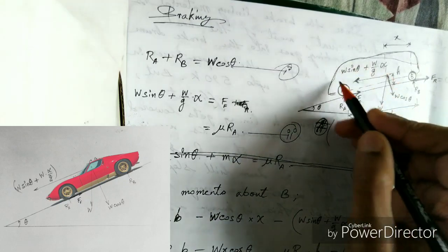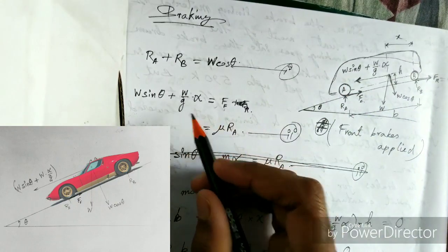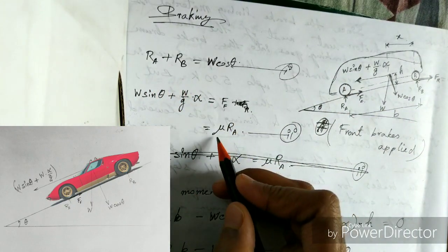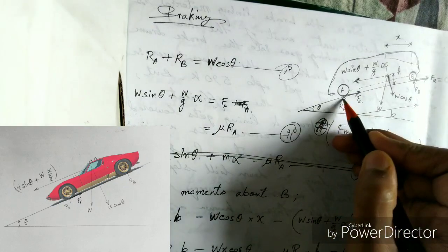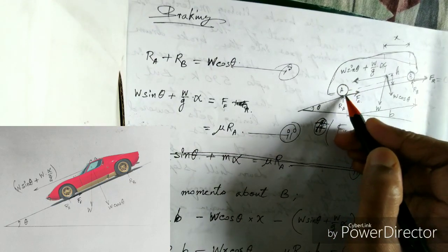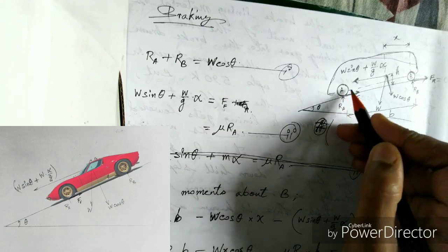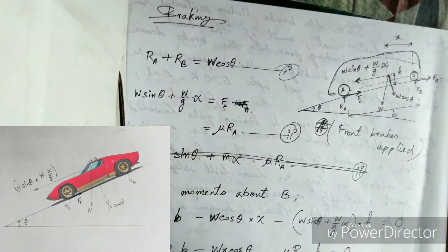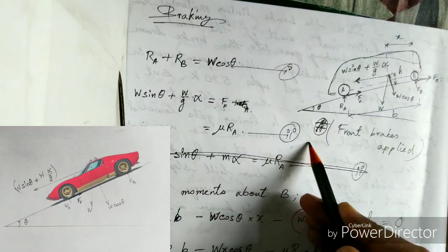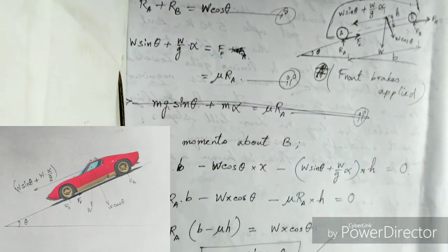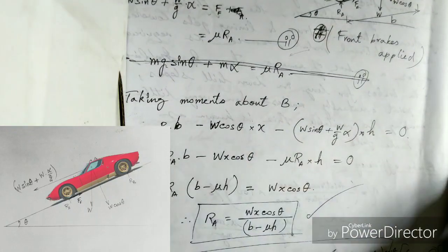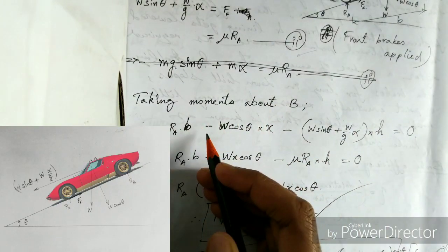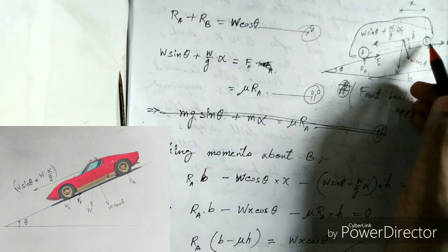That's why this whole summation equals FF. Now FF equals mu into RA, where mu is the coefficient of friction between the tires and the road for the front wheels, and RA is the reaction force. That's how we get our second equation. Now let us take the moment about B.